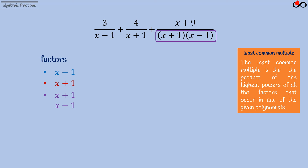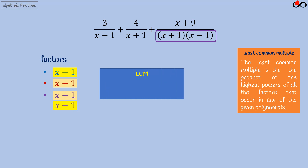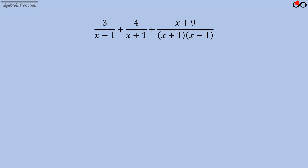The highest power of factor (x minus 1) is 1, and similarly for (x plus 1). Therefore the least common multiple of the denominators equals (x minus 1) times (x plus 1). We draw a single fraction bar and set the denominator equal to this least common multiple.